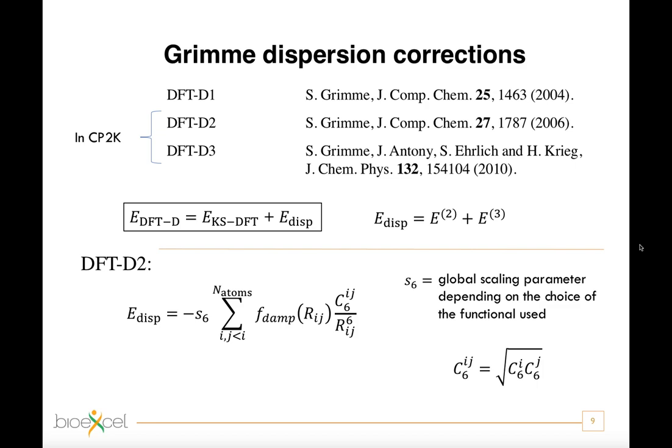And finally, FDAMP is a function that damps the dispersion correction for shorter interatomic distances, in order to avoid near singularities at small distances, but also mid-range double-counting effects of correlation at interatomic distances.